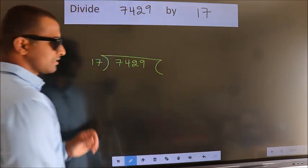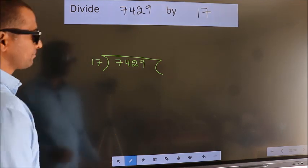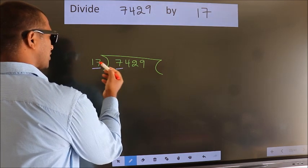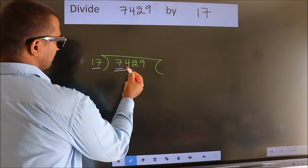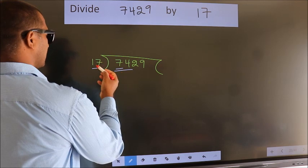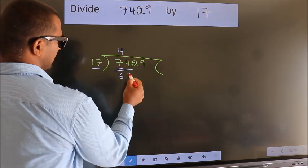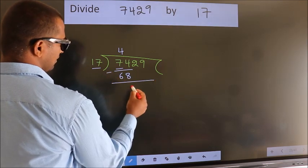This is your step 1. Next. Here we have 7. Here 17. 7 smaller than 17, so we should take two numbers: 74. A number close to 74 in the 17 table is 17 fours, 68. Now we should subtract. We get 6.